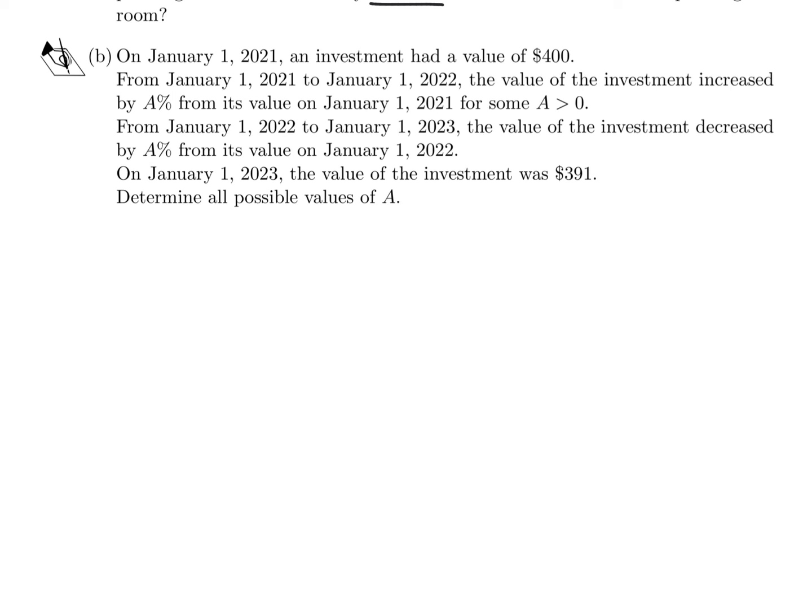On January 1st, 2021, an investment had a value of $400. From January 1, 2021 to January 1, 2022, the value of the investment increased by A% from its value on January 1, 2021 for some A > 0. From January 1, 2022 to January 1, 2023, the value decreased by A% from its value on January 1, 2022. On January 1, 2023, the value was $391. Determine all possible values of A. Before I get into the A's, let me give you a number example. Let's say A was 10%.